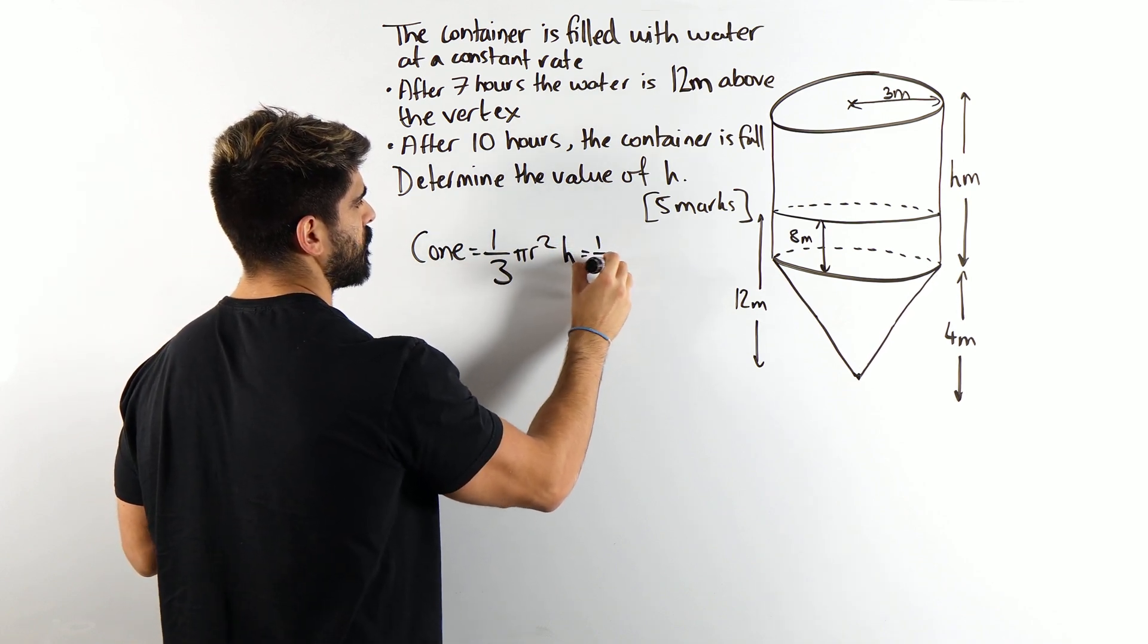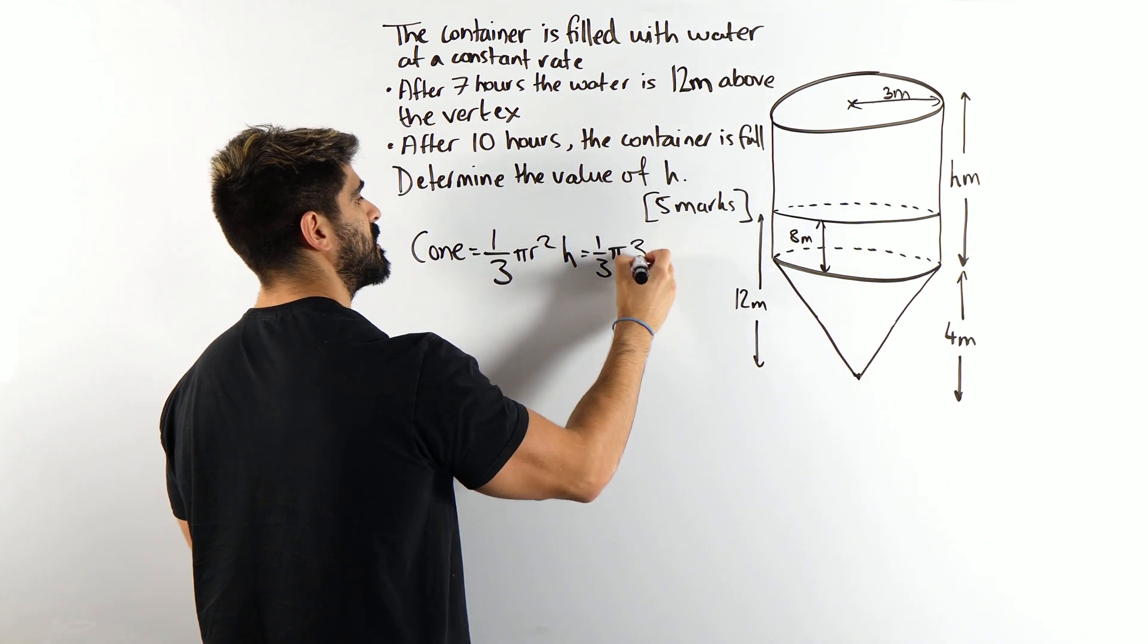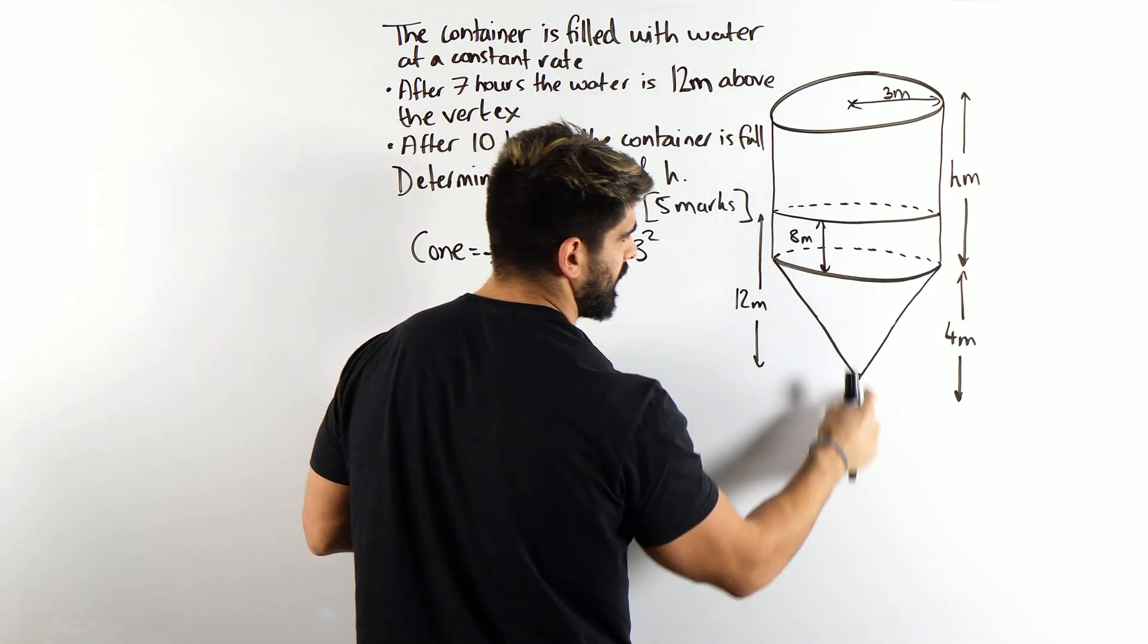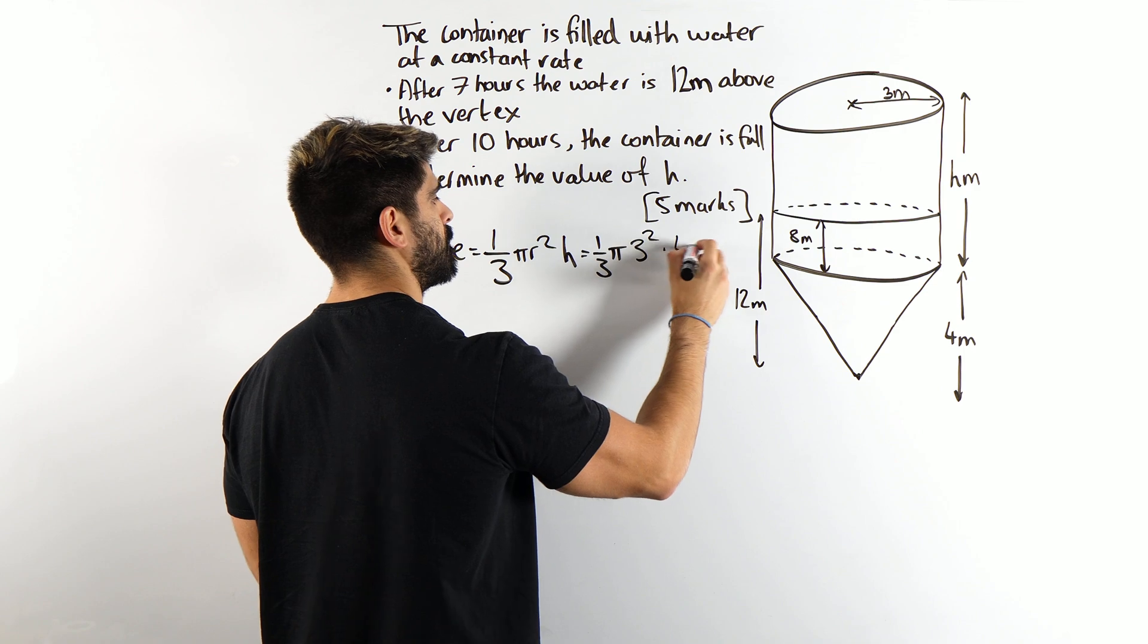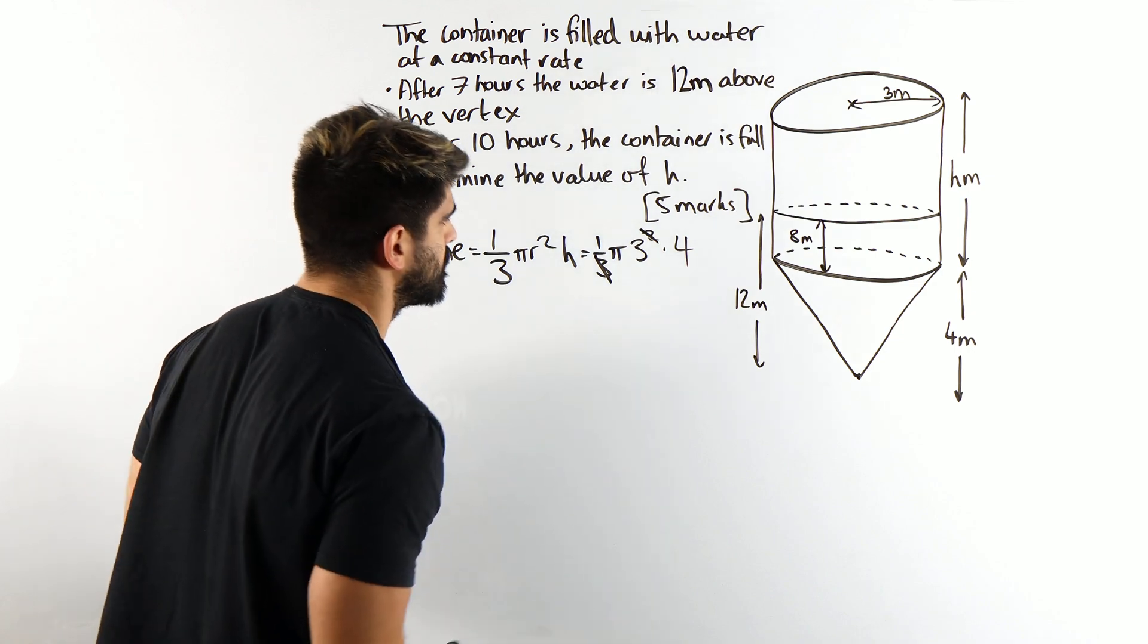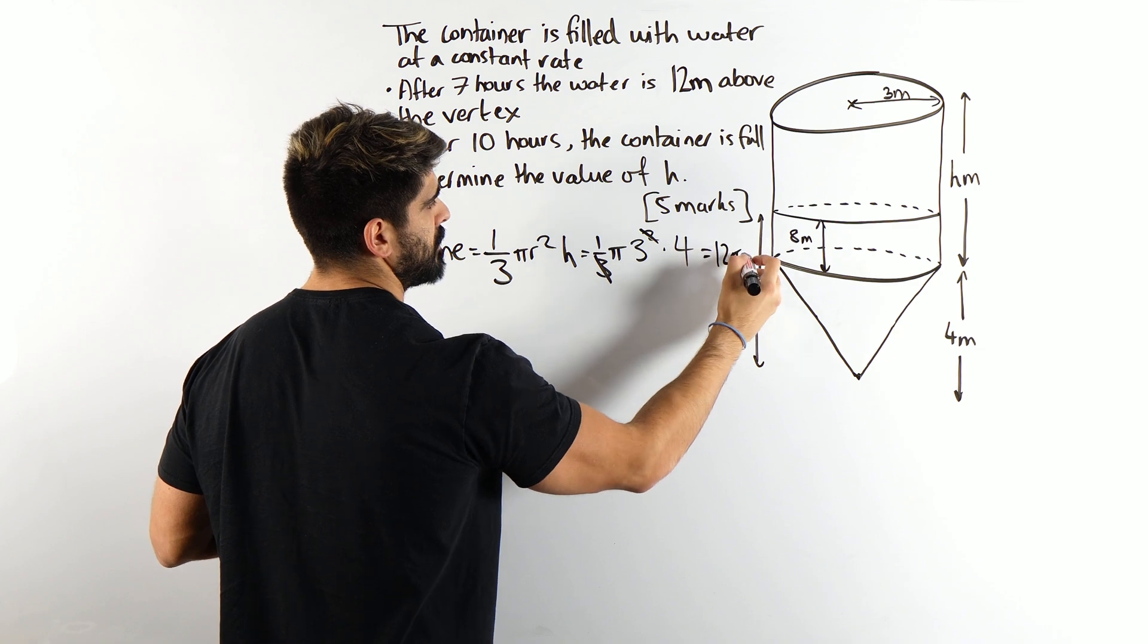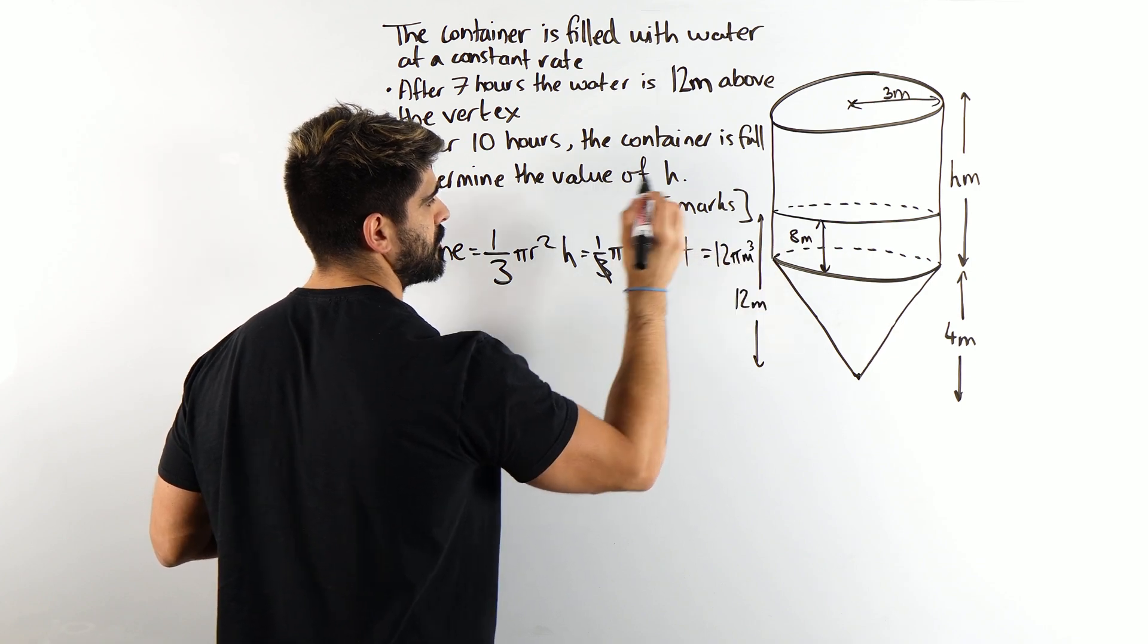In our case, we have one third pi. Now the radius of this is the same as the cylinder. So three squared times the height, which is four. A third of three squared is just three. So we get 12 pi meters cubed.